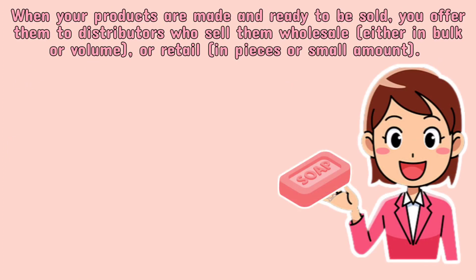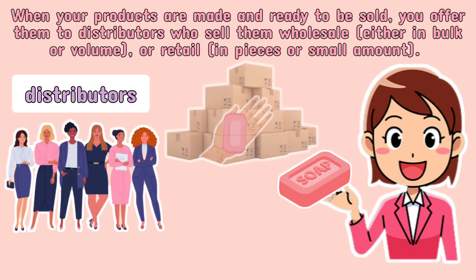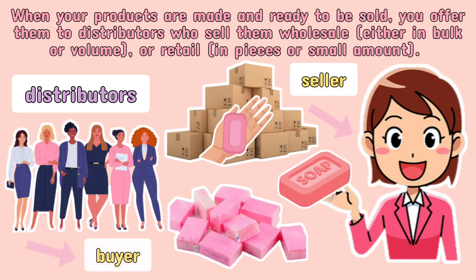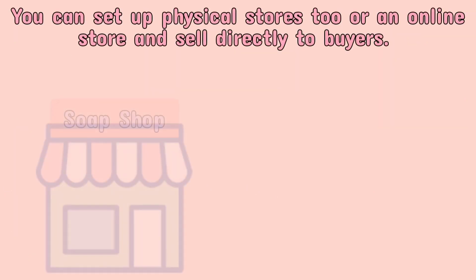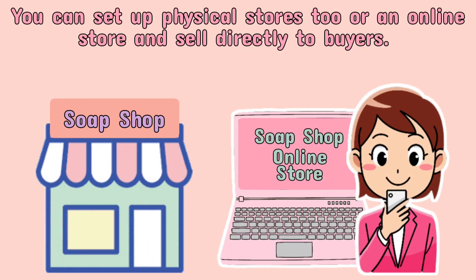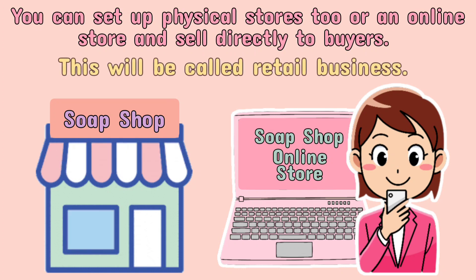When your products are made and ready to be sold, you offer them to distributors who sell them wholesale — either in bulk or volume — or retail in pieces or small amounts. At this stage, you become the seller while the distributor becomes the buyer. You can also set up physical stores or an online store and sell directly to buyers.